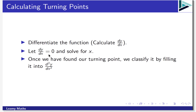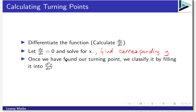Once you have dy/dx, set it equal to zero because turning points occur where dy/dx equals zero, then solve for x — that gives your x-value. Don't forget to find the corresponding y-value by substituting back into the original function. Once you've done that, you've found the turning point, and the next thing is to classify it.